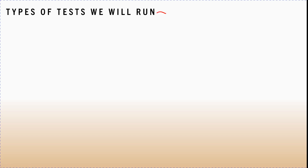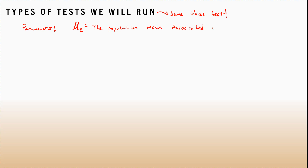The first thing is to talk about what type of tests we will run. It's the same three tests: left-tailed, right-tailed, and two-tailed. But now we have two samples, so we're comparing two means. The parameters we're investigating are two population means: mu sub one — the population mean associated with the first sample — and mu sub two — the population mean associated with the second sample.